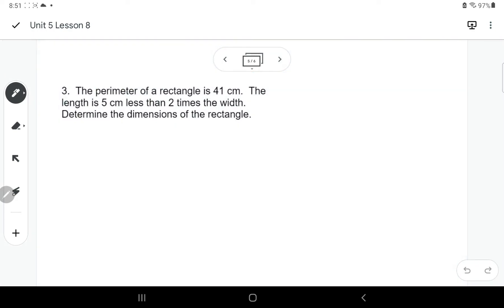Okay. Next one. Here we've got the perimeter of a rectangle is 41 centimeters. So I don't know what I'm going to be doing here, but if I see the word rectangle, I'm going to draw a rectangle. A diagram can really sometimes help.